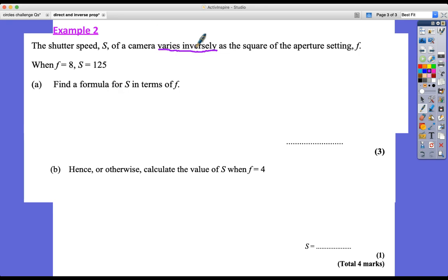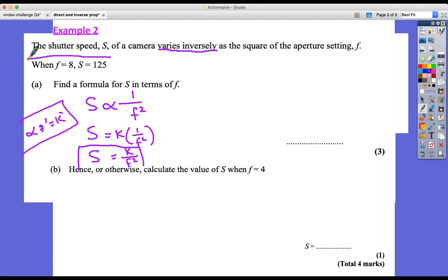All right, so the first thing I need to do is take that first sentence and put it into an equation. So s first of all varies inversely, it's one over the square of f, f squared. Same old thing, this becomes equals k. Turn it into an equation. So s is equal to k times by one over f squared, so s is equal to k over f squared. And there's our formula so far. But we haven't finished because we have to put in the values f equals 8 and s equals 125 to find the value of k.